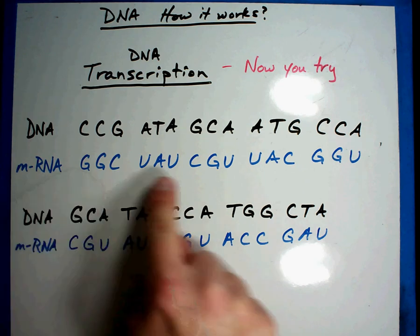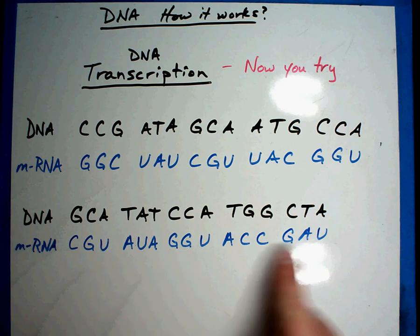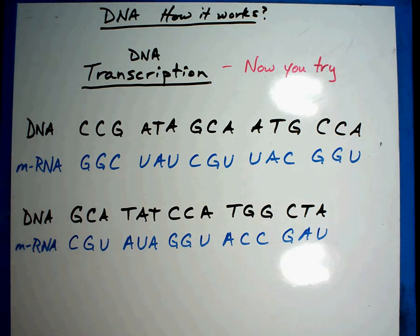So here's a secret message and here's another secret message. Let's see what happens when we take a secret message in the cell and it tells the cell exactly what to do. That's going to be called DNA translation, and that's our next video.